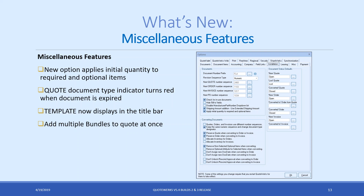Among miscellaneous features, we've made it more apparent when you're working on a template document — the template name will appear in the title bar and on the document items window. We also added the functionality to add multiple bundles to a quote at once. These were actually feature suggestions from the QuoteWorks user summit last week, showing we take those suggestions seriously.